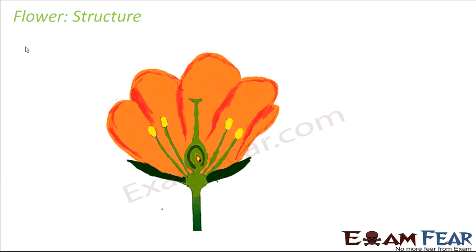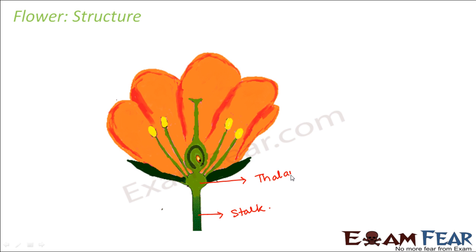Now let us look at the structure of the flower using a simple diagram to understand its various parts. First, this is the stalk of the flower — the tube-like structure which actually acts as the holder for the flower, holding the flower above it. The stalk has a swollen end above, and this swollen end is called the thalamus.